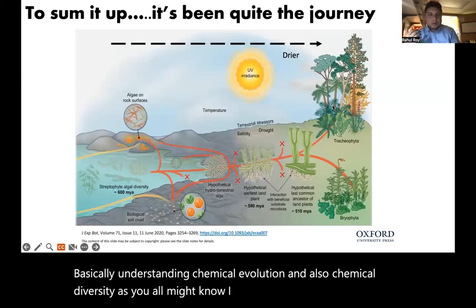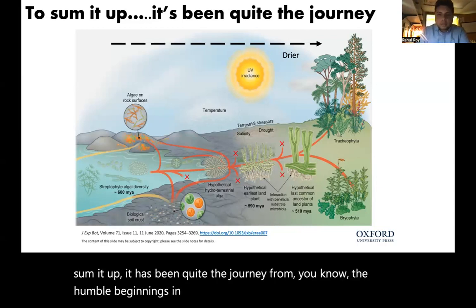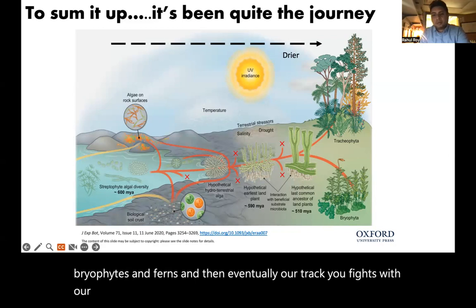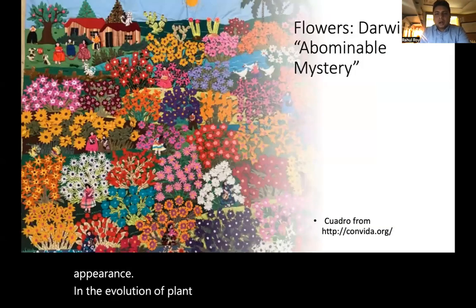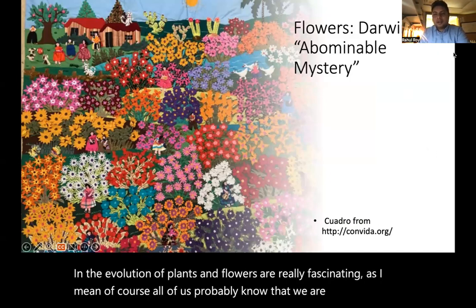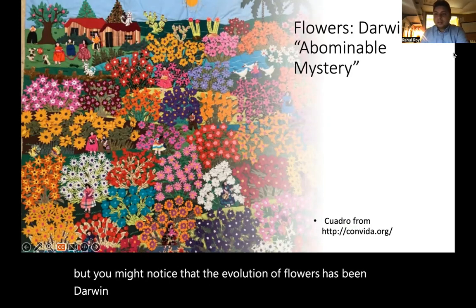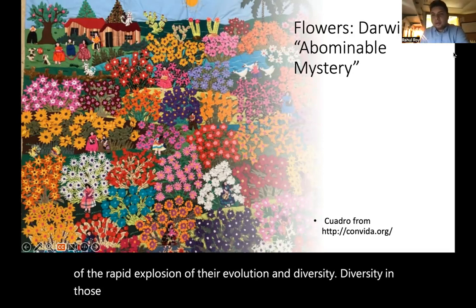I like to show this slide because to sum it up, it has been quite the journey from the humble beginnings in the oceans to these crawling bryophytes and ferns, and then eventually our tracheophytes with flowering plants being the most recent appearance in plant evolution. Flowers are really fascinating, and the evolution of flowers has been Darwin's abominable mystery because of the rapid explosion of their evolution and diversity since they appeared.